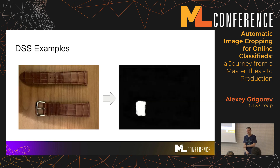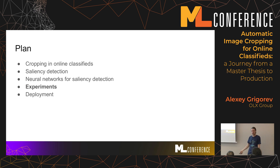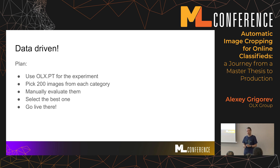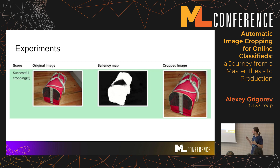It doesn't always work though — there are cases where it cannot detect, especially when the image quality is quite low or when there are objects that the neural net doesn't know. So we thought, okay, we know that in some cases it doesn't work well and in some cases it does. We ran some experiments to define where we should actually run this model. As a playground for testing, we chose OLX Portugal. We took all categories, randomly sampled 200 images from each category, applied the model, and then manually evaluated the results.